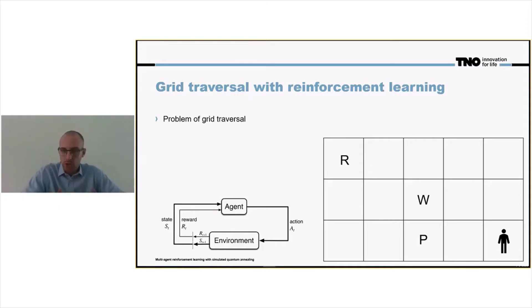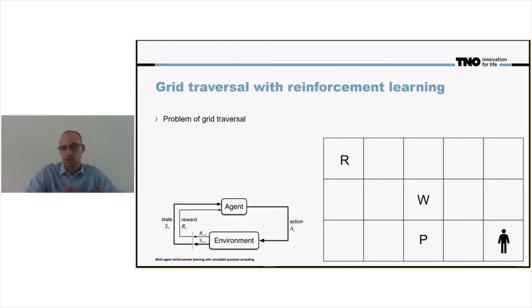Suppose we are located somewhere in the grid and we are given the task to obtain the reward. We have to traverse the grid to get to location R.